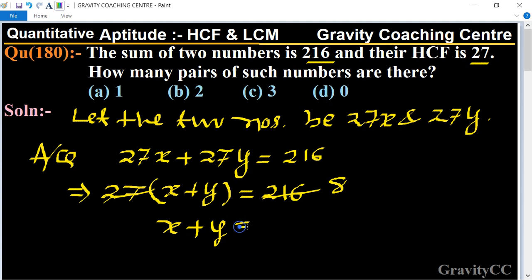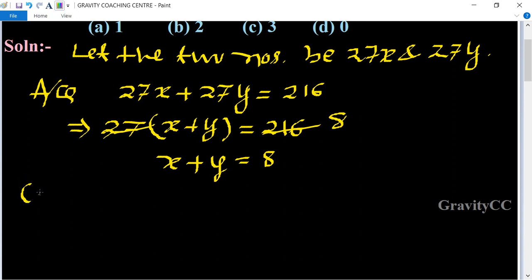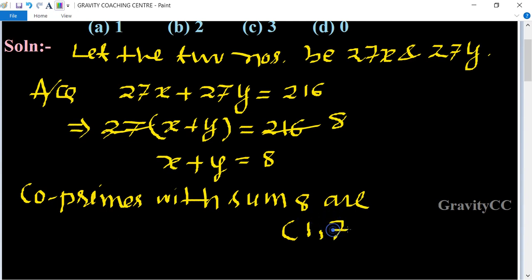Now we find the pairs of 8. We take only co-prime pairs. Co-prime pairs with sum 8 are 1 comma 7, and 3 comma 5.